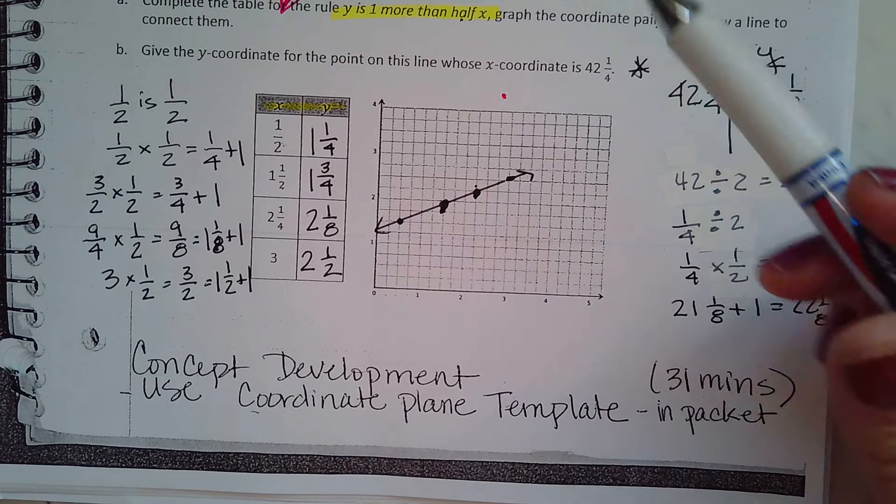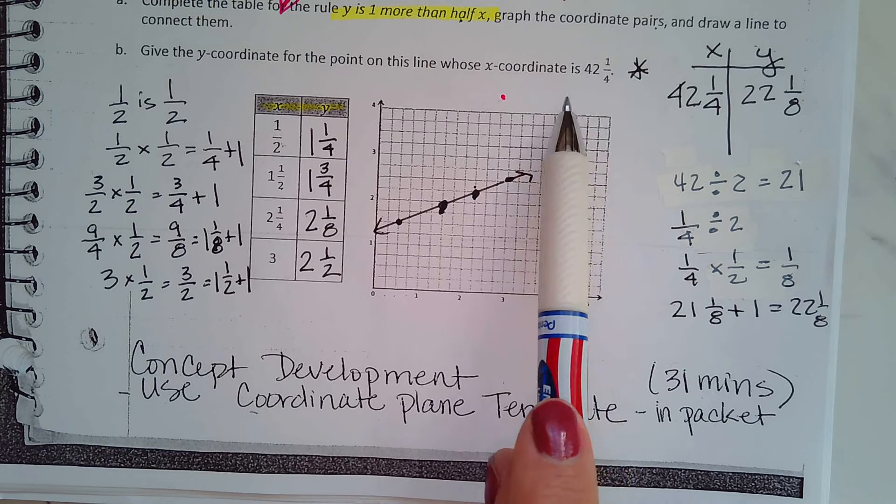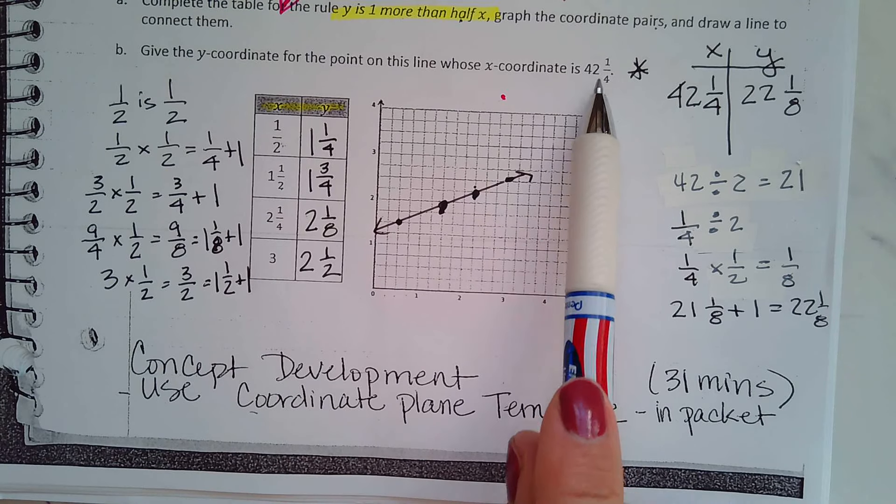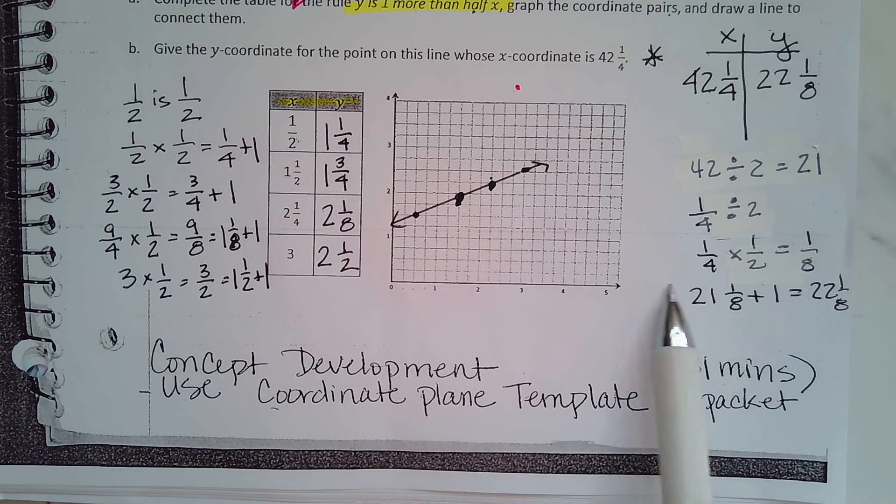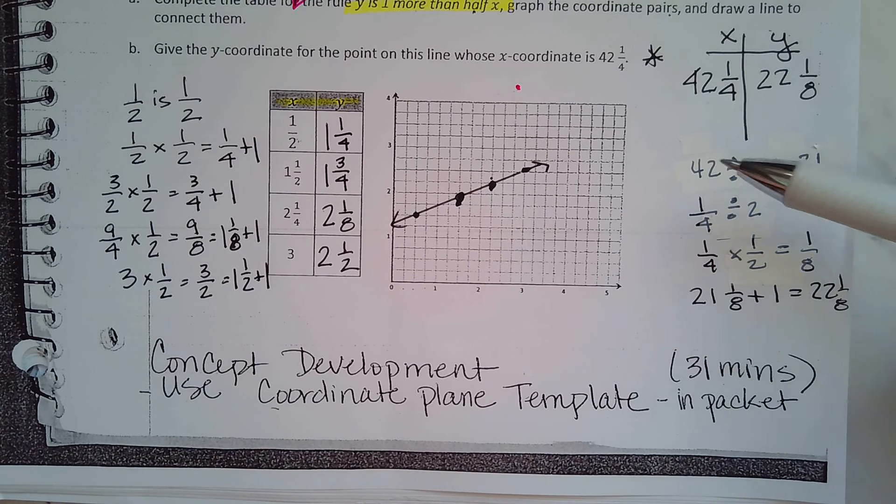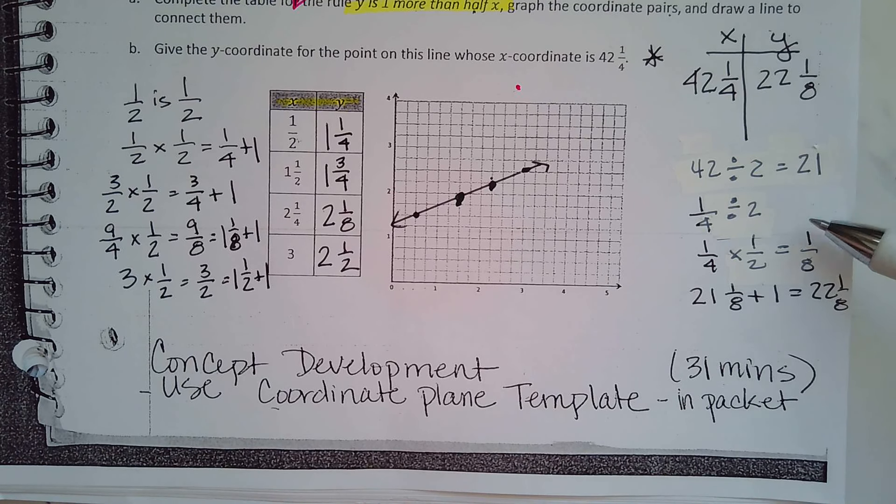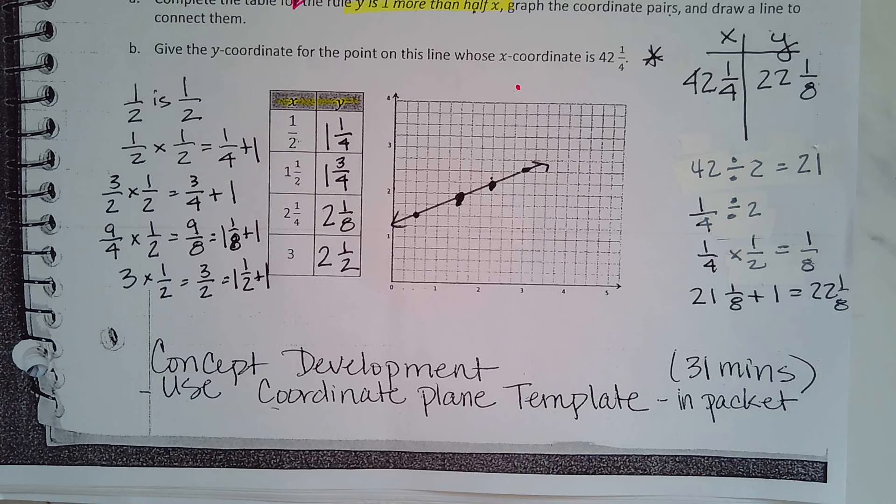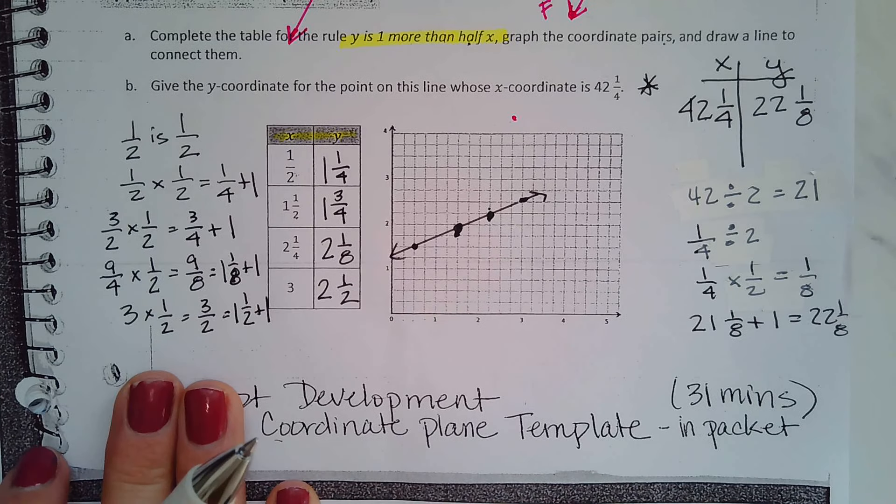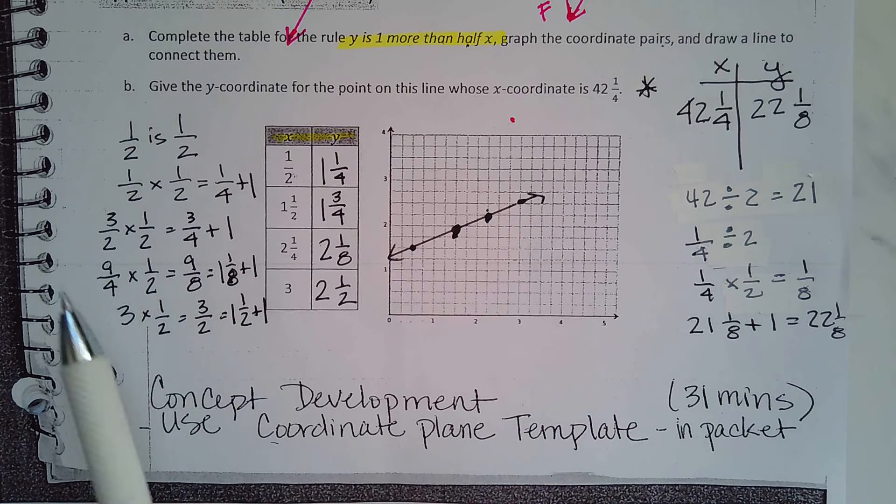Then we have give the y coordinate for the point on this line whose x coordinate - if this were to go all the way up to 42 and a fourth going along the x axis, what would the y axis be? So using the rule I took 42 divided by 2 is 21, then 1 fourth divided by 2 is 1 fourth times 1 half which is 1 eighth. 21 and 1 eighth plus 1 is 22 and 1 eighth. So if something here didn't make sense, go back, rewatch the video, try this out again and make sure you know how to do this. I'm sure this will be on the test that we take at the end.